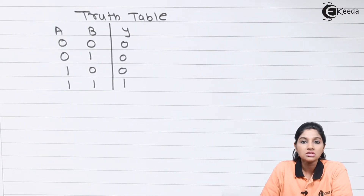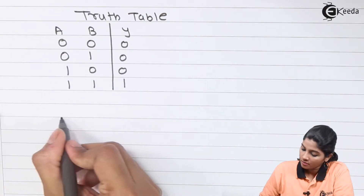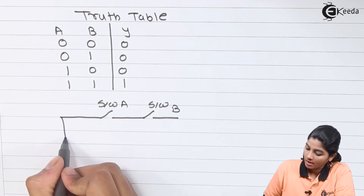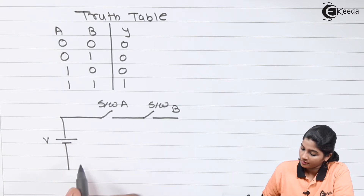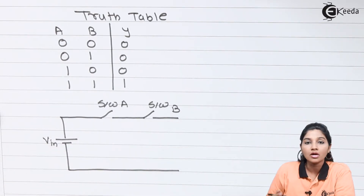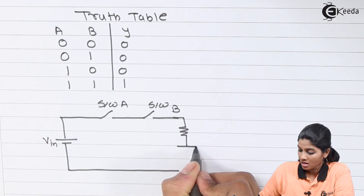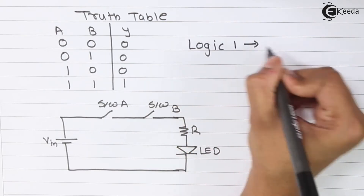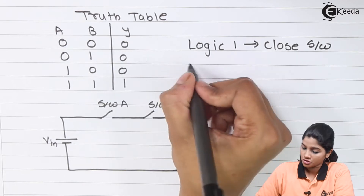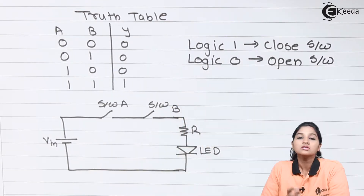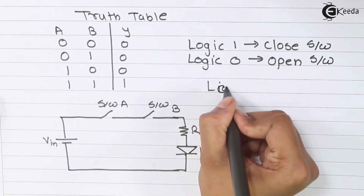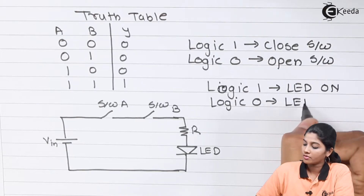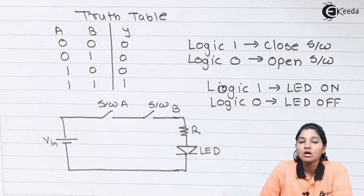The AND gate can be represented by using a series connection of two switches A and B. We are considering two switches A and B with a power supply and the output is seen on an LED. A current limiting resistor and LED is connected at the output. Logic 1 means the switch is closed, logic 0 means the switch is open, and logic 1 represents the LED ON state. Now let's try out every combination one by one.